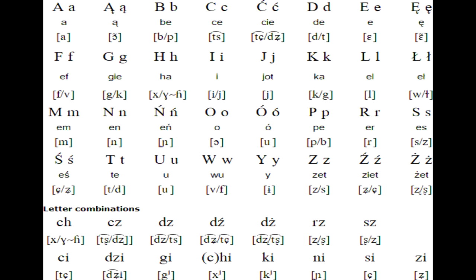At that time, students of all confessions in Belarus studied the Latin language, so they were pretty familiar with it. At first, almost entirely the Polish alphabet was used. This means that sounds like Sh, Ch, and Zh were written with the help of digraphs, the sound V was written with the letter W as in German, and the sounds W, Ź, and Ż were not expressed at all.